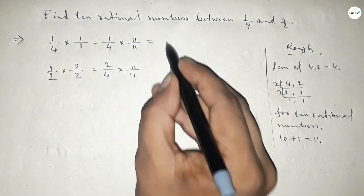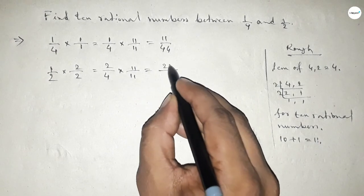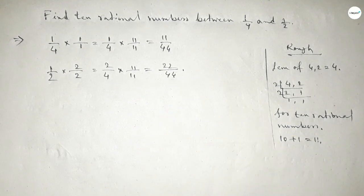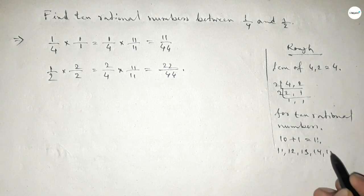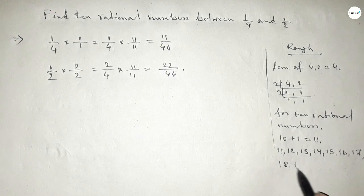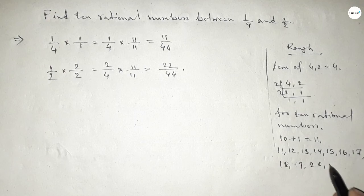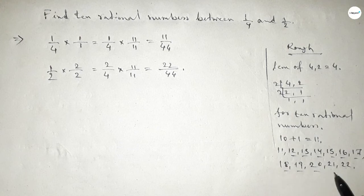So this is 11/44 and this is 22/44. Now between 11 and 22, we can find 10 natural numbers, and by these natural numbers we can form 10 rational numbers.